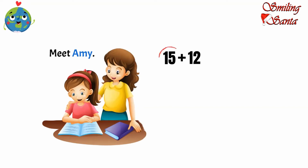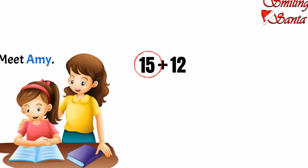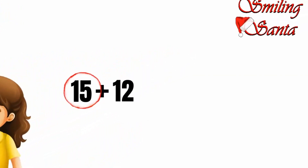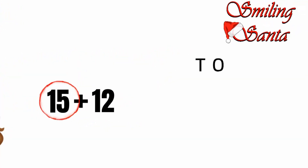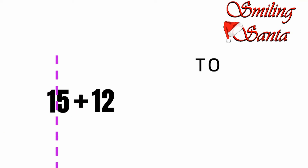We have already learned that every two-digit number is made of tens and ones. Have you missed that video? No worries — you can find it using the I button. The same link is given in the description box as well. Go and watch that first; you'll understand this video better. We can break every two-digit number into tens and ones.